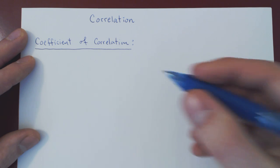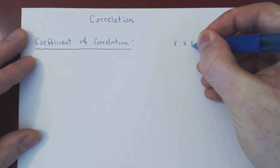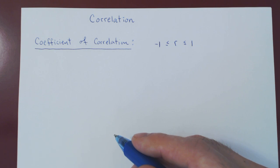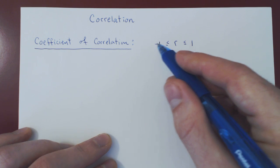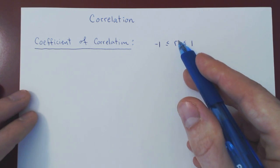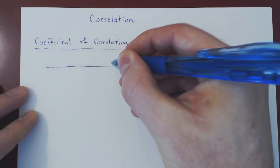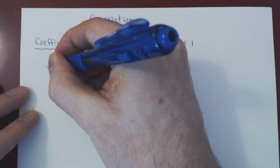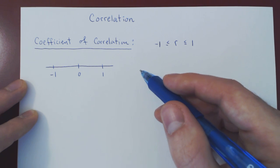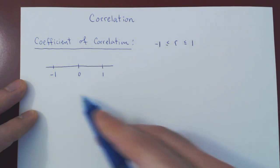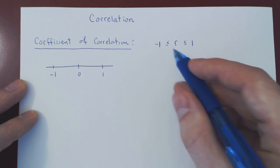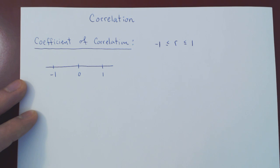We denote this coefficient with a lowercase r, and this quantity will always be between negative 1 and 1. We'll look at three possibilities. r can be very close to 0 — think of this interval for r where 0 is the center, 1 is the right-hand point, and negative 1 is the left-hand point. Let me show you examples for the three main cases: when r is close to negative 1, when r is close to 0, and when r is close to 1, to see how to read the value of r and what it tells you about the quality of the linear regression.